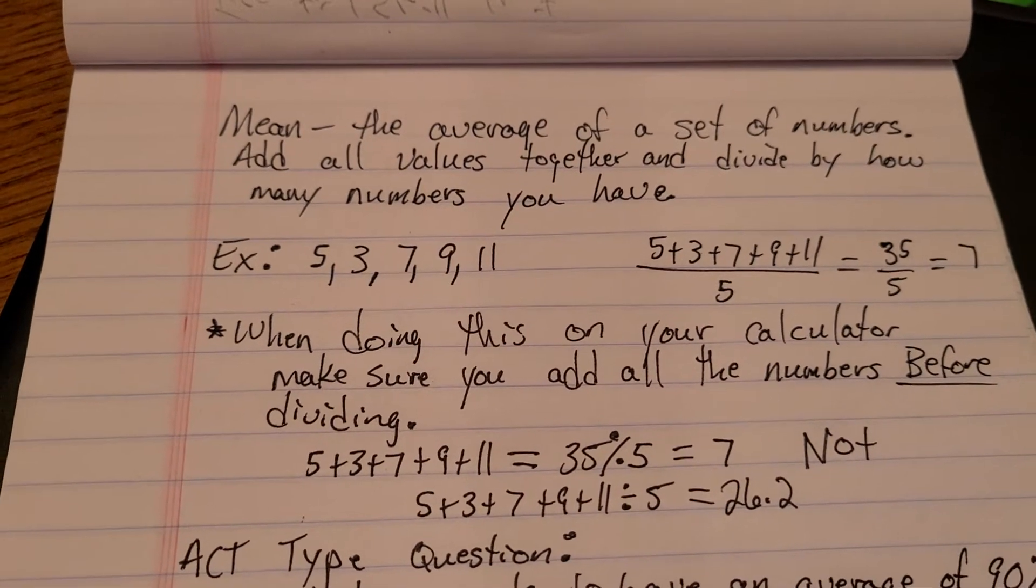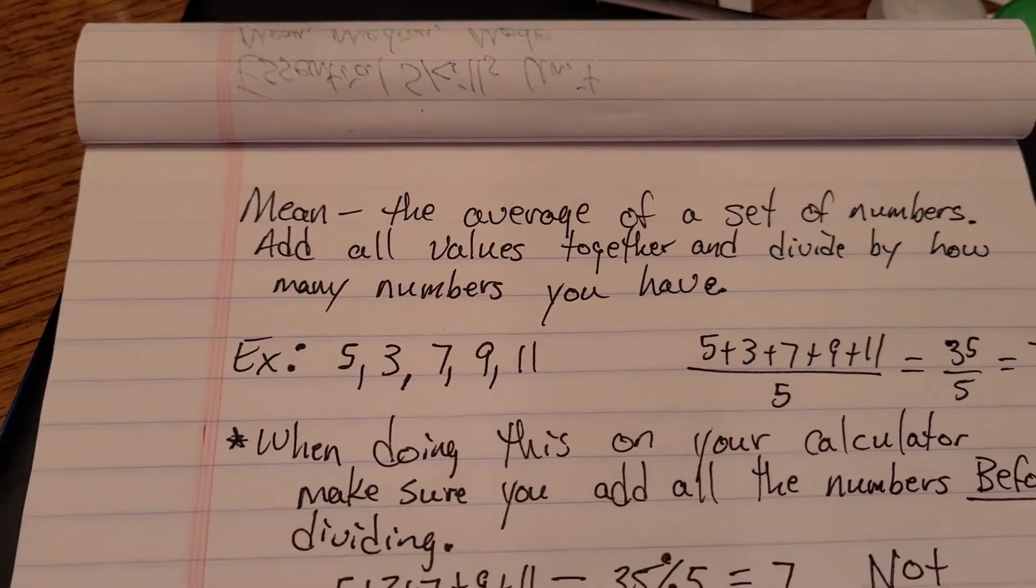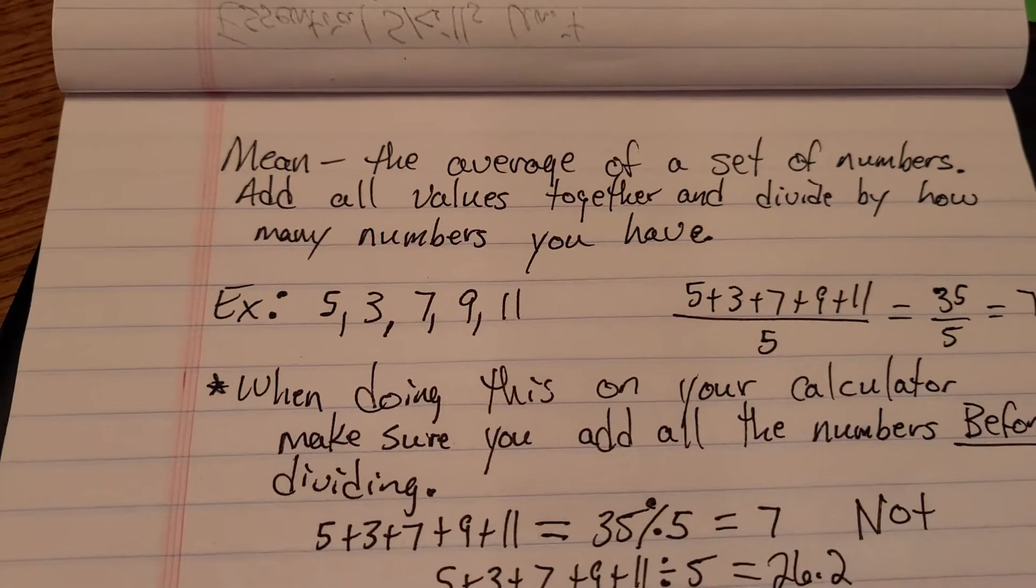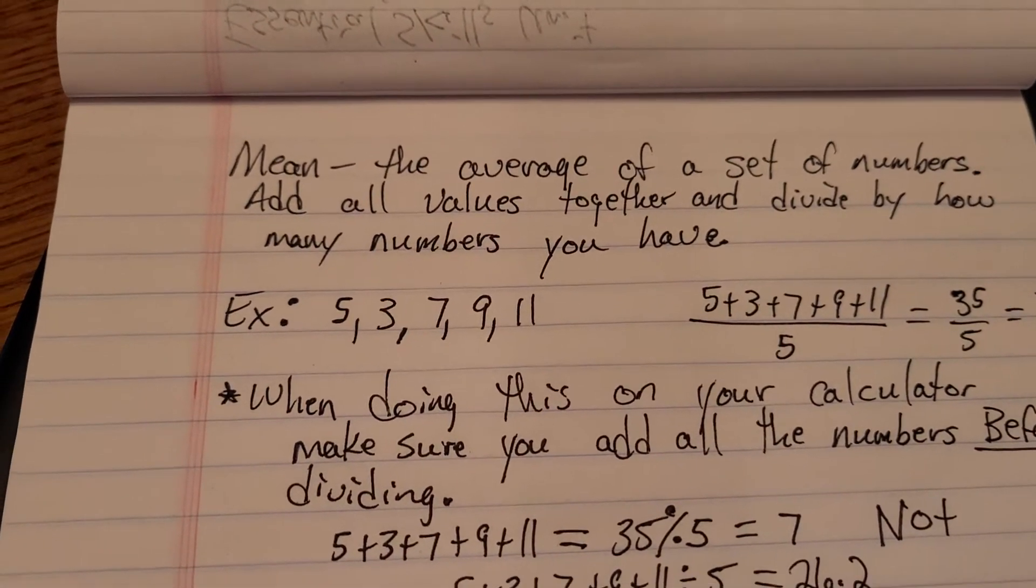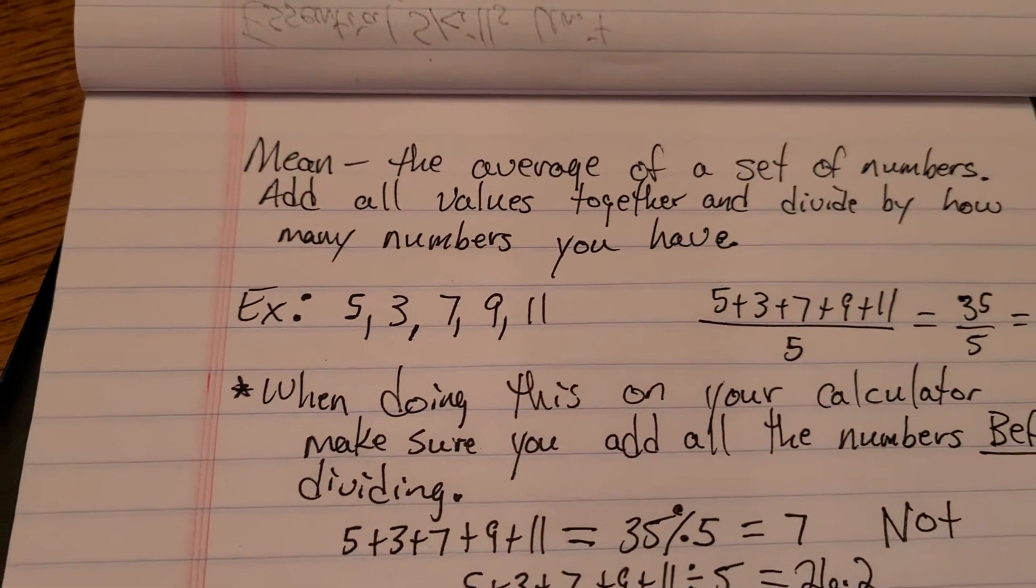So I apologize for that. But the first one in the essential skills talks about mean, median, and mode. Mean is the one we're going to focus the most on because I think that one, even though it seems fairly easy, can also be difficult based on the types of questions they ask.